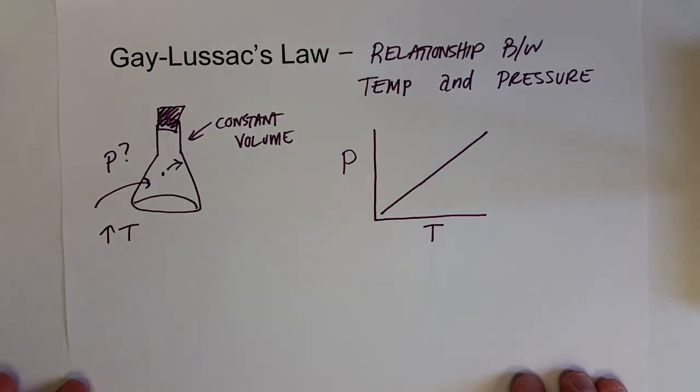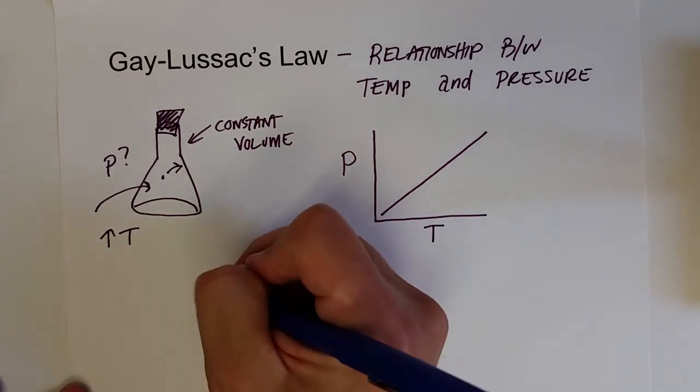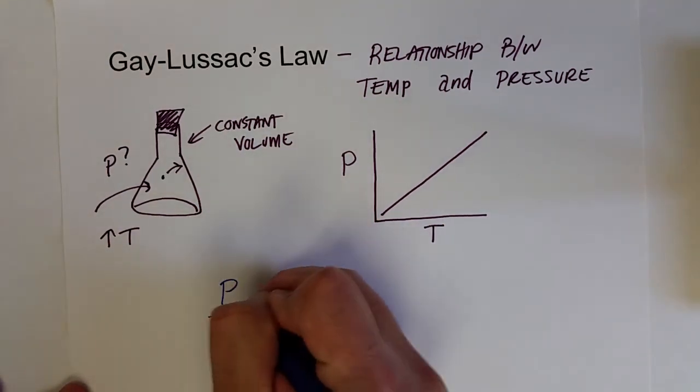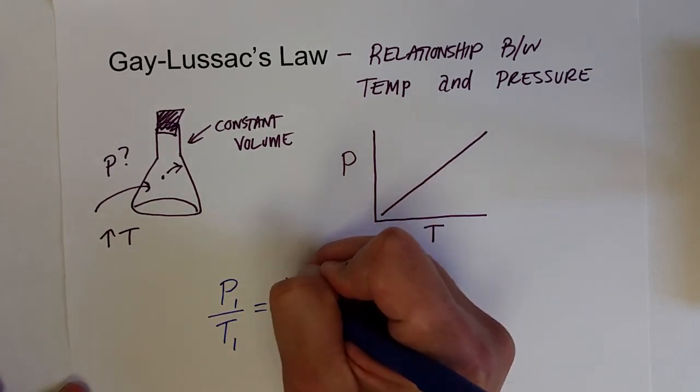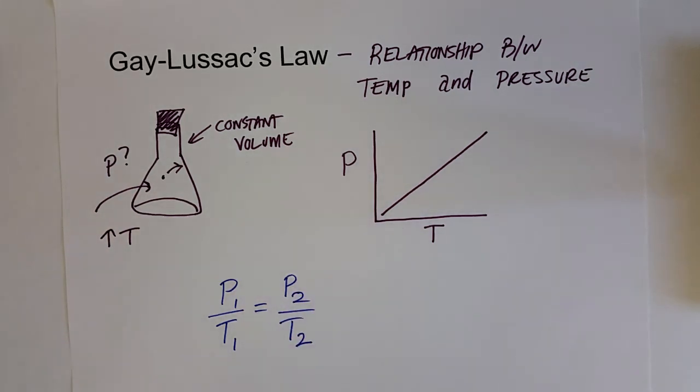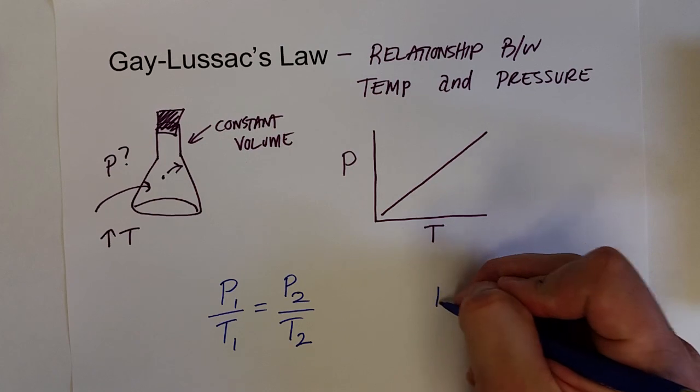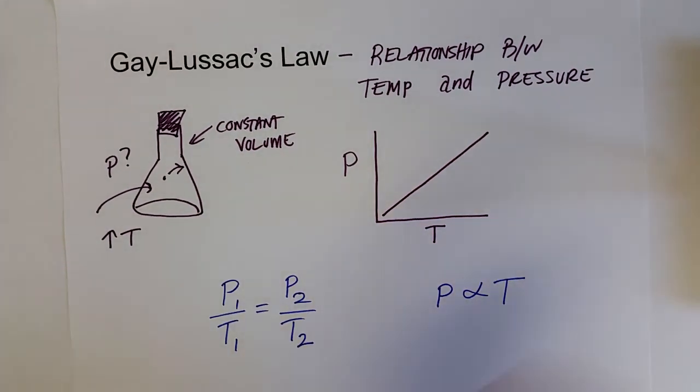And so we can develop the same two mathematical representations for Gay-Lussac's Law. Pressure over temperature in two different scenarios would equal each other. So P1 over T1 equals P2 over T2. And we can also say that pressure is proportional to temperature.